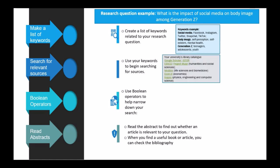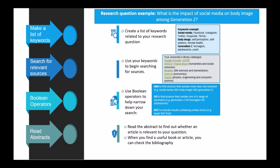Your university library catalog will also help you. Using keywords, you search databases such as Google Scholar, JSTOR, EBSCO Host, Project MUSE for Humanities and Social Sciences, Medline for Life Sciences and Biomedicine, EconLit for Economics, and Inspect for Physics, Engineering and Computer Science. Look at the different search engines relevant to your field of study. As students registered at Unisa, you will be able to do that via the Unisa library.